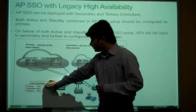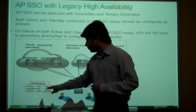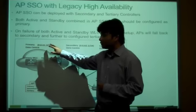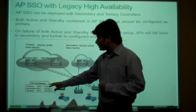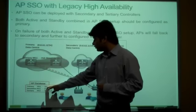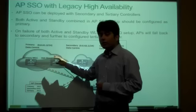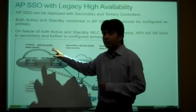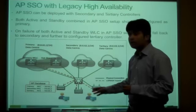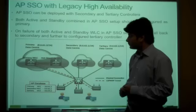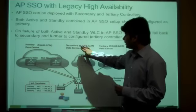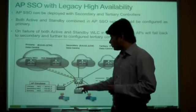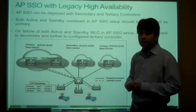Looking at the AP database, the primary WLC is configured as 9.6.61.2, which is the primary controller — both active and standby share the same IP, so no need to configure the primary controller individually on all APs. A secondary controller and a tertiary controller can be configured on each and every AP for legacy HA fallback.